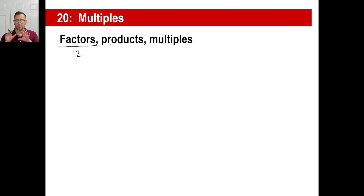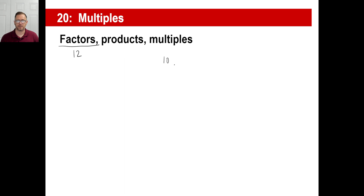Products means numbers that are multiplied together. A product is the answer to a multiplication problem. Multiples are just a number — like the multiples of 10 are 10, 20, 30, 40, and so on. The multiples of 3 are 3, 6, 9, 12, and so on. That's a multiple.